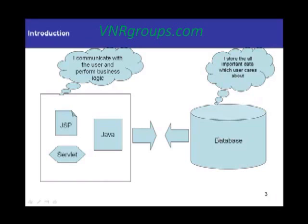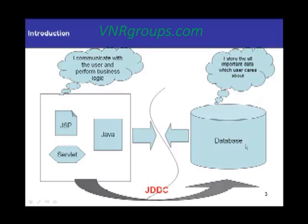The database is the place where all your important information related to your web application is stored. Your front-end application communicates with the end user and performs business logic, while your database stores the information used by your web application. Both are really very important — without the front-end there's no use of the data, and without the data there's no use of providing a front-end. But as you can see in this image, there's a disconnect between these two. So how are you going to bridge the gap between your front-end application and your back-end database?